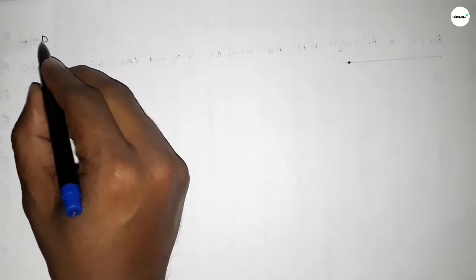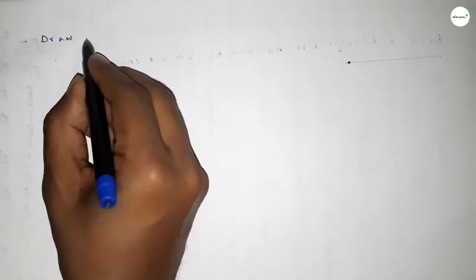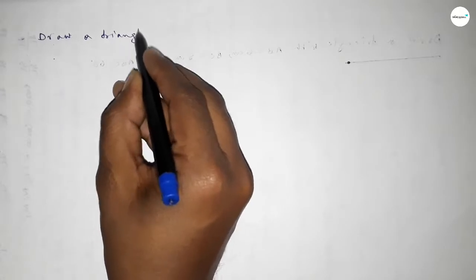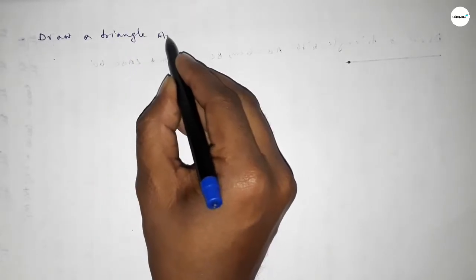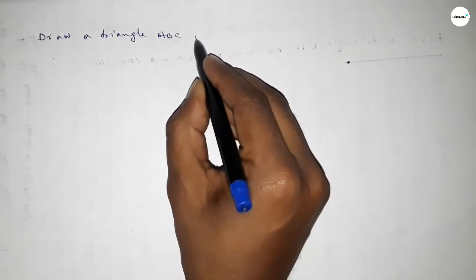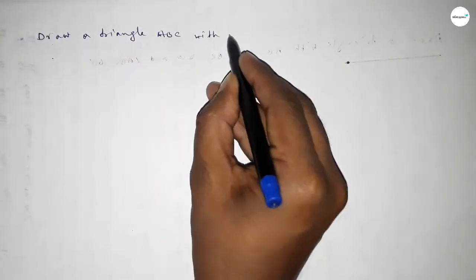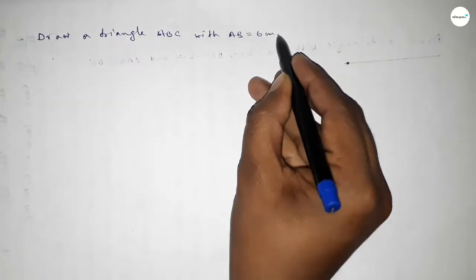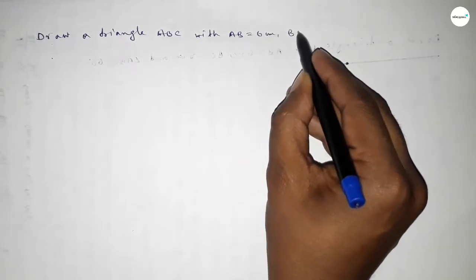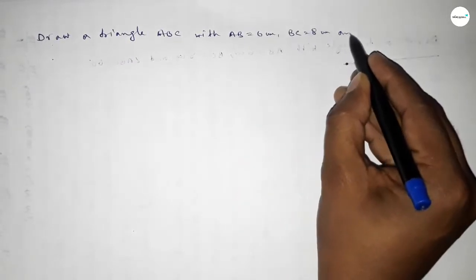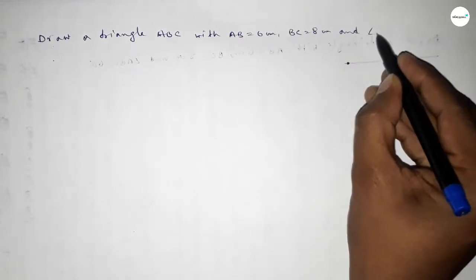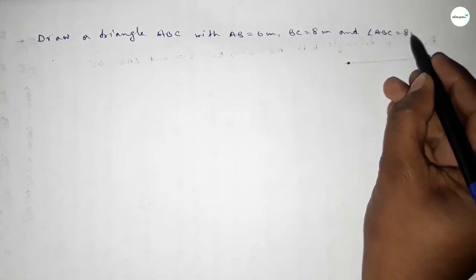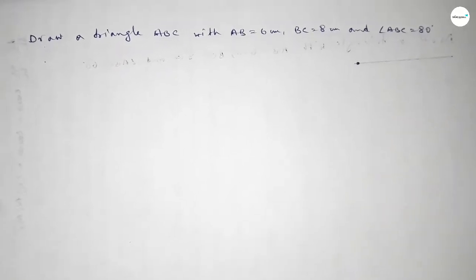Hi everyone, welcome to SI Share Classes. Today in this video we have to draw a triangle ABC with AB equal to 6 centimeter, BC equal to 8 centimeter, and angle ABC equal to 80 degrees. So let's start the video.